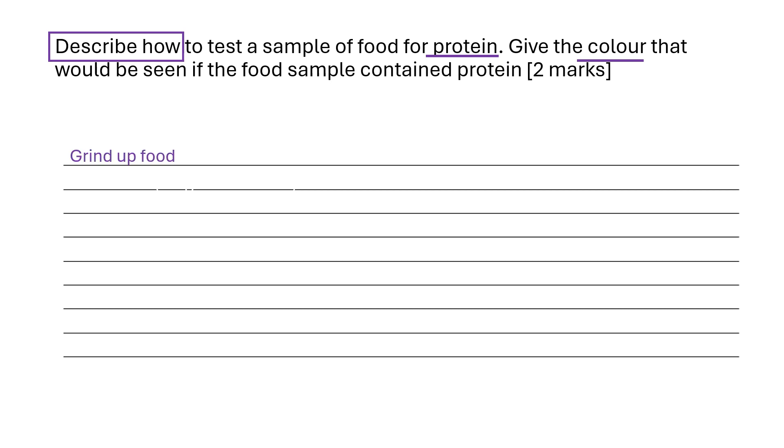So first of all we need to grind up the food, we then need to add the biuret reagent or solution, and that will then turn from blue to purple or lilac.